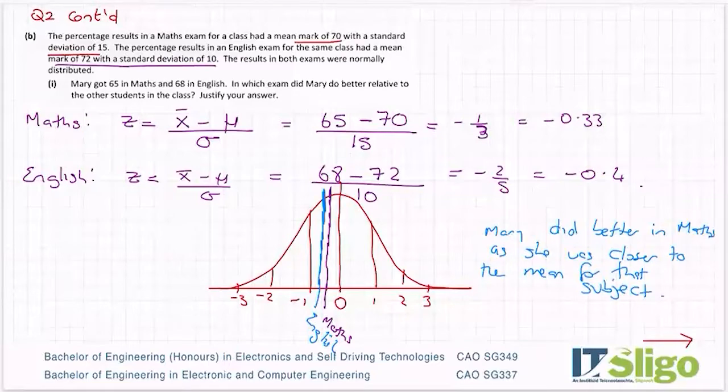Now I must say if the results had been positive, so if you were up this side of the mean, if that was maths and this was English, then of course she would again do better in English, because positive numbers, the bigger, the better. I hope that makes sense.